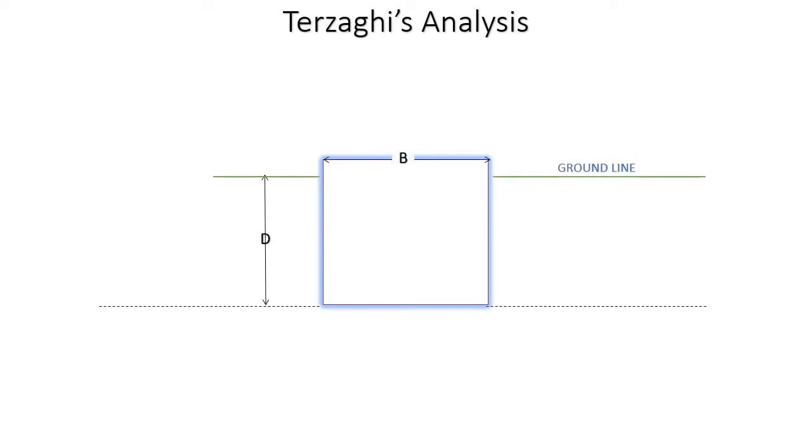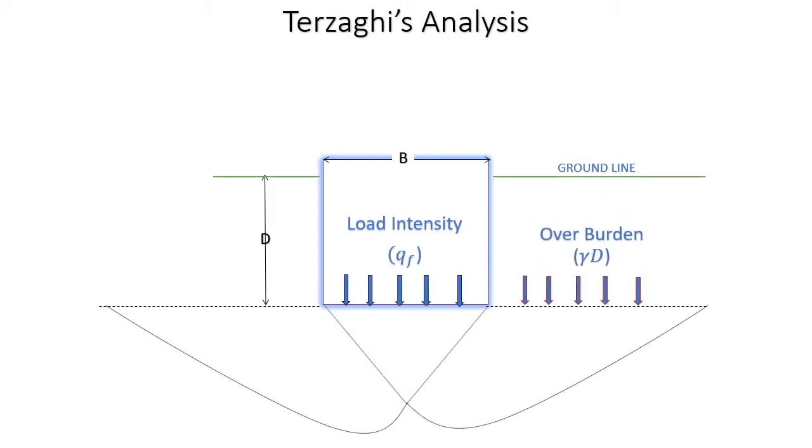Using the Terzaghi equation for bearing capacity, we consider a foundation with a base of a depth d below the ground level and a width b. A load intensity Qf is applied to the soil at the base of the foundation, along with any additional overburden. This calculation only considers the general shear failure case, which is divided into three zones.